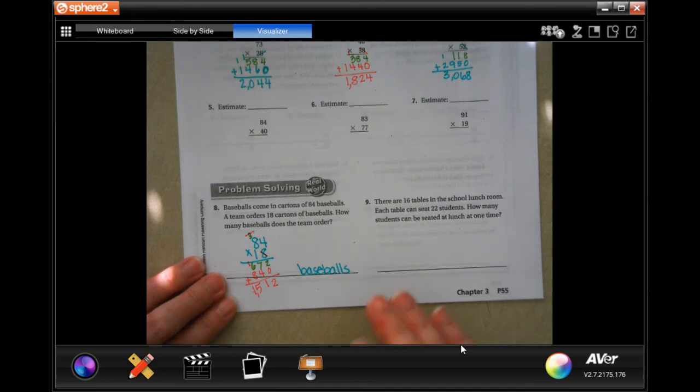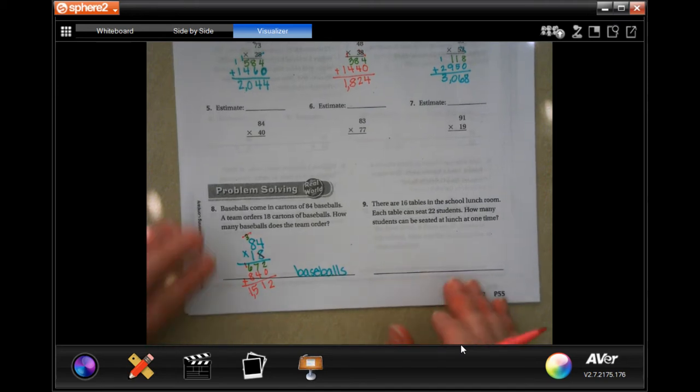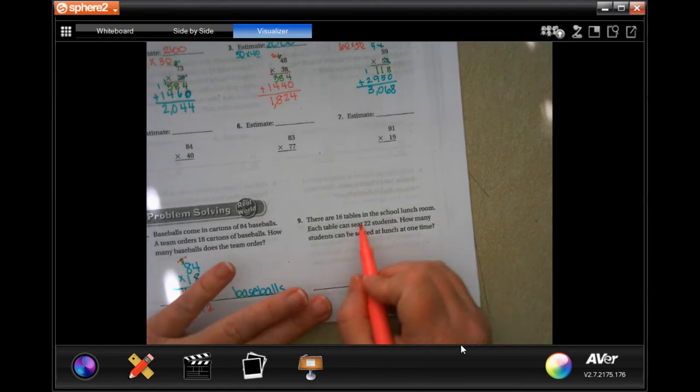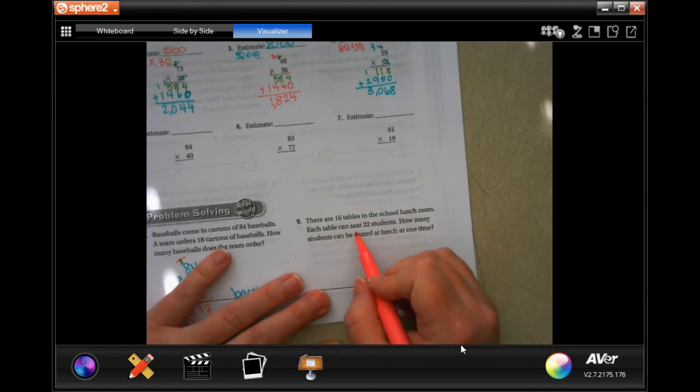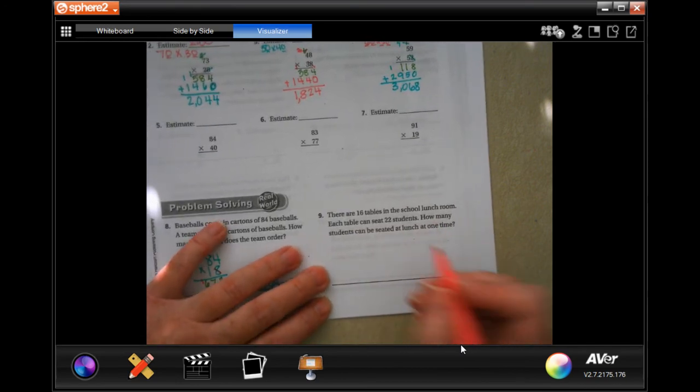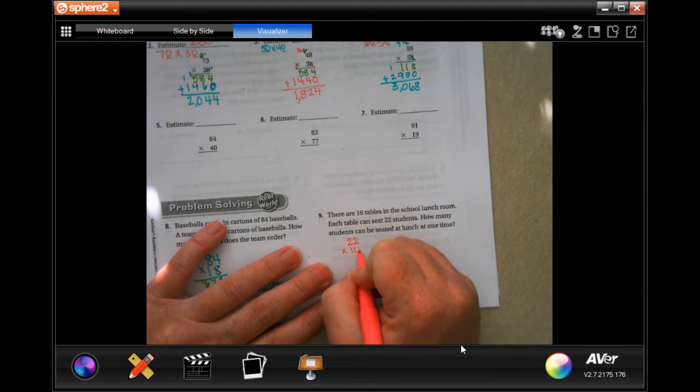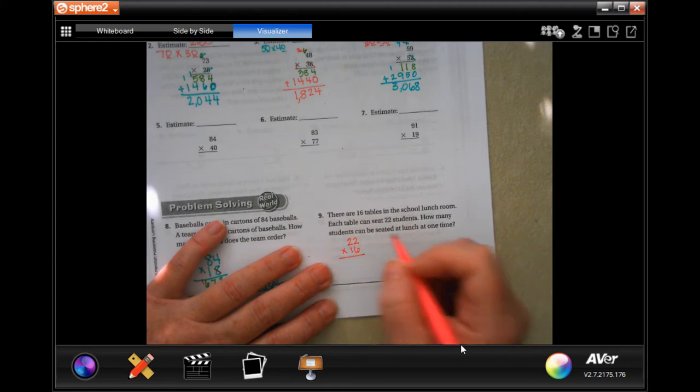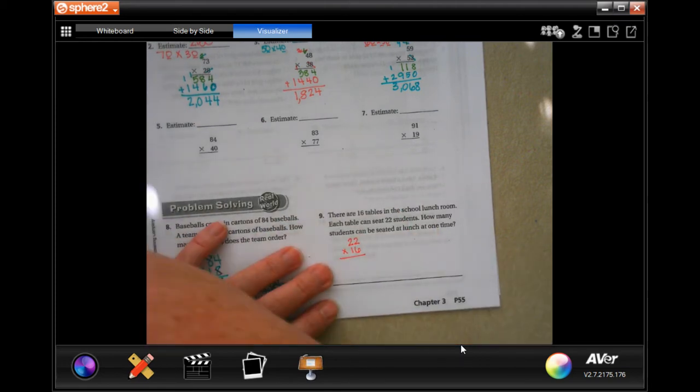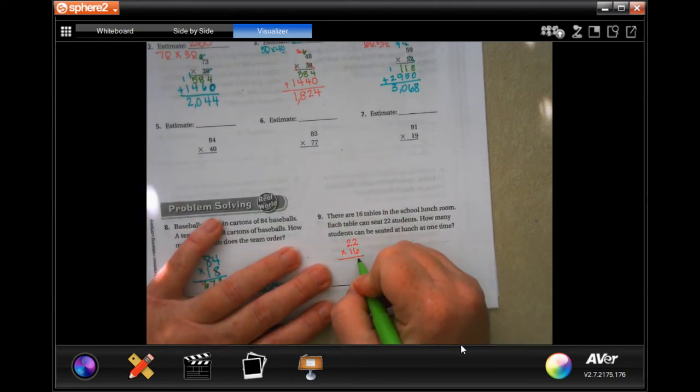It's a little messy. You can use scratch paper if you want to, always. There are 16 tables in the school lunchroom. Each table seats 22 students. How many students can be seated at lunch at one time? So I'm going to put the 22 up top, and I'm going to put the 16 on the bottom, because when I do the second row, it's going to be easier for me to multiply by 1 than by 2. So 6 times 2 is 12, carry our 1. 6 times 2 is 12 again, plus 1 is 13.